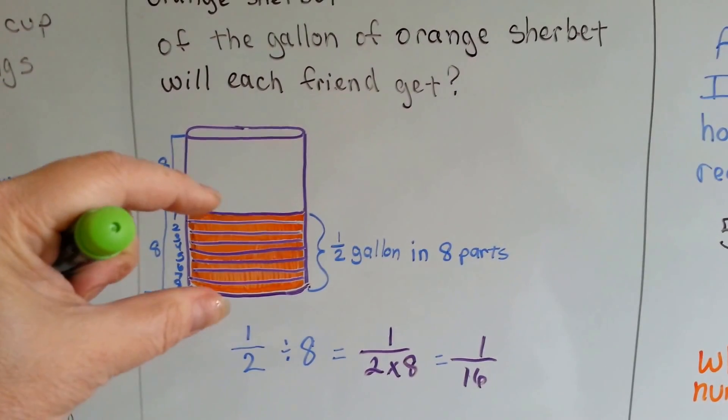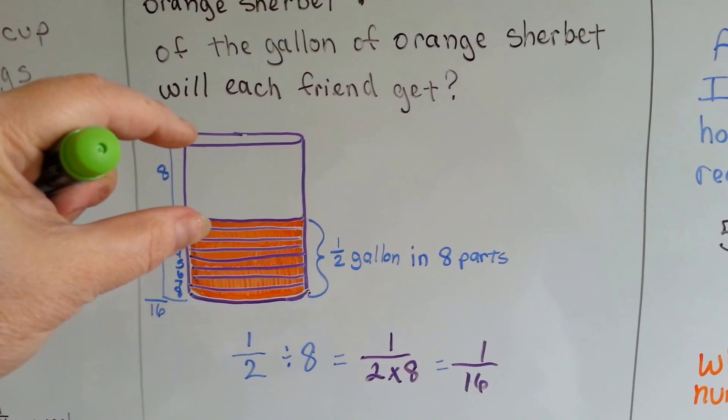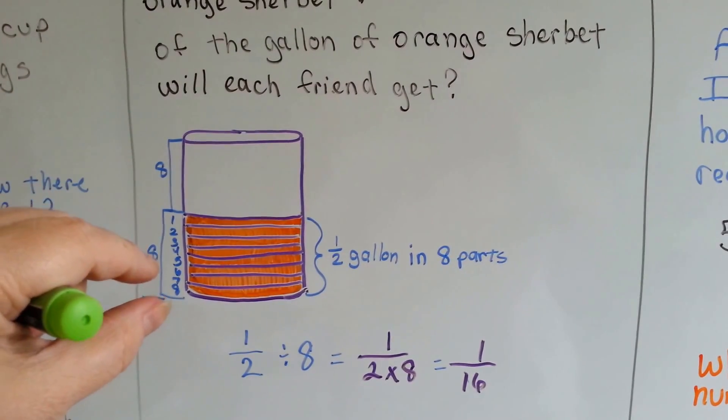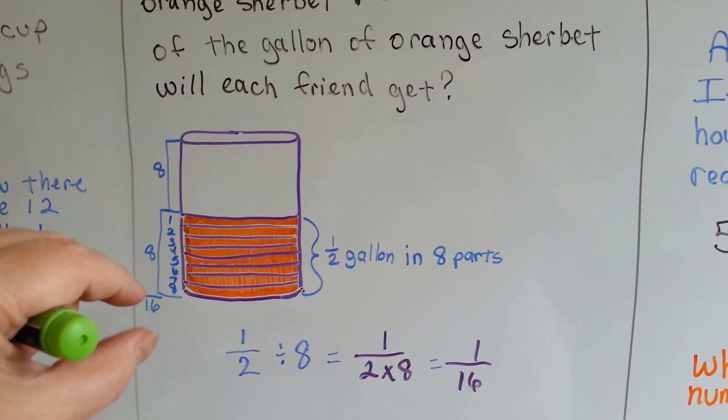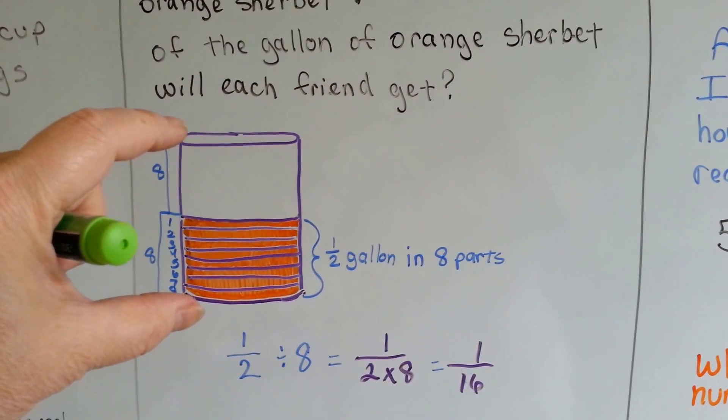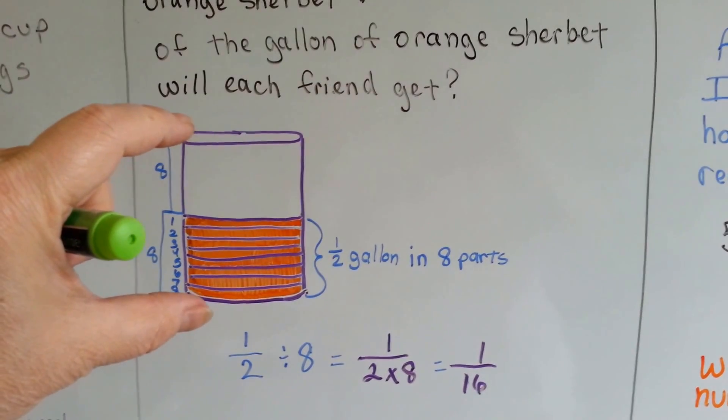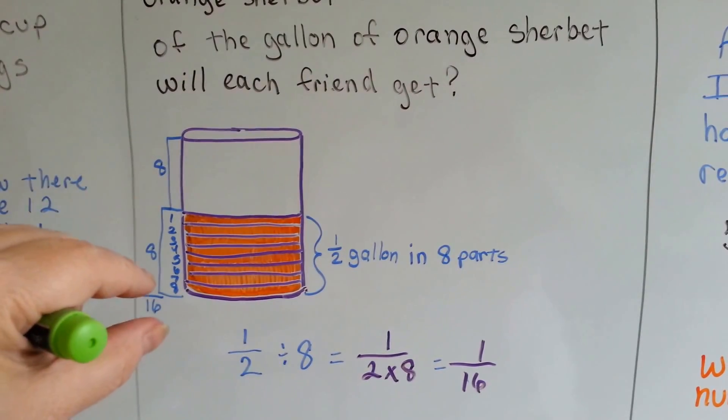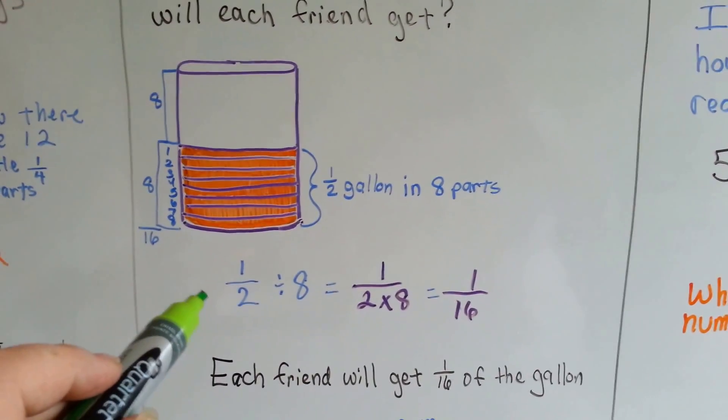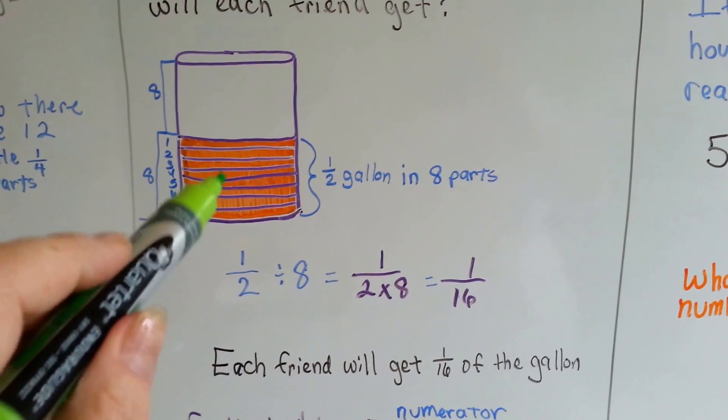So half gallon divided into eight would be one-sixteenth each. If this is eight pieces, then we would give this eight pieces. Then there would be a total of sixteen pieces. That means each of these little tiny eighth pieces becomes one-sixteenth, because the whole thing has sixteen pieces. And the fraction is part of the whole. So it becomes one-sixteenth. Each friend gets one-sixteenth of the gallon.